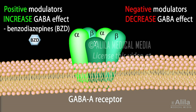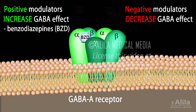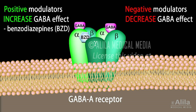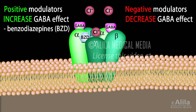For example, benzodiazepines, a class of drugs used to treat anxiety, bind to the GABA-A receptor and facilitate its binding to GABA, thus potentiating GABA's inhibitory effect.